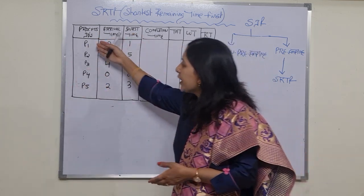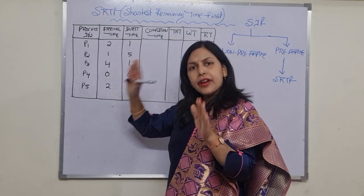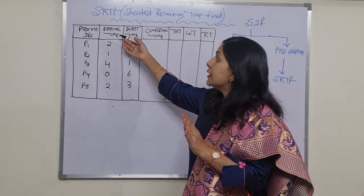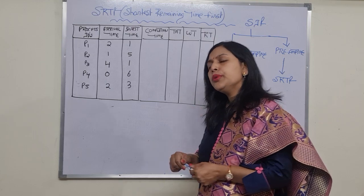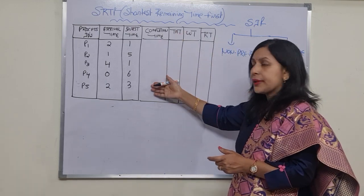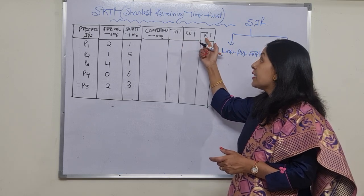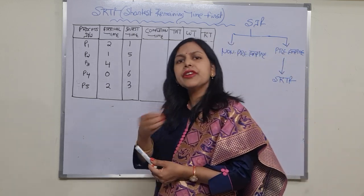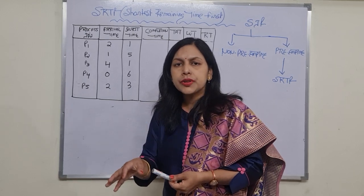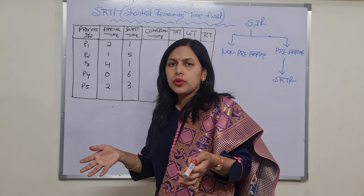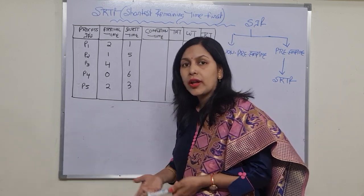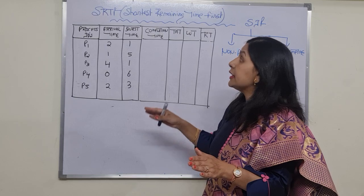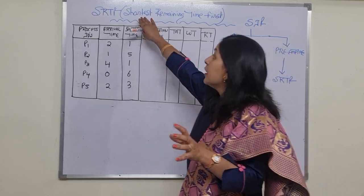I have taken one numerical in which we are having five processes: P1, P2, P3, P4, and P5. The arrival time and burst time are also given. You have to find out the completion time, turnaround time, waiting time, as well as response time. In case of preemptive versions of scheduling algorithms we find out the response time, since in non-preemptive versions the response time is not very meaningful.